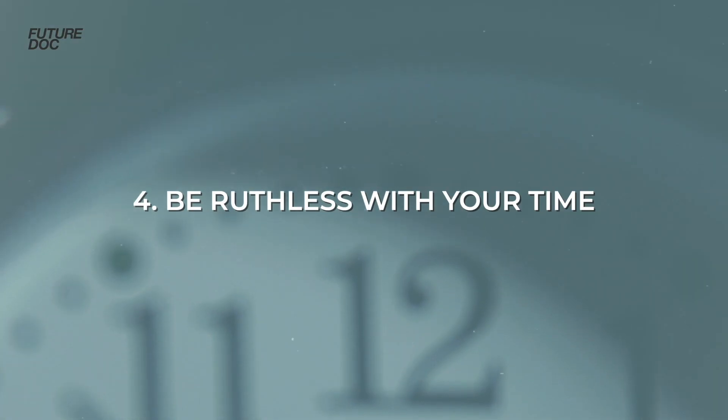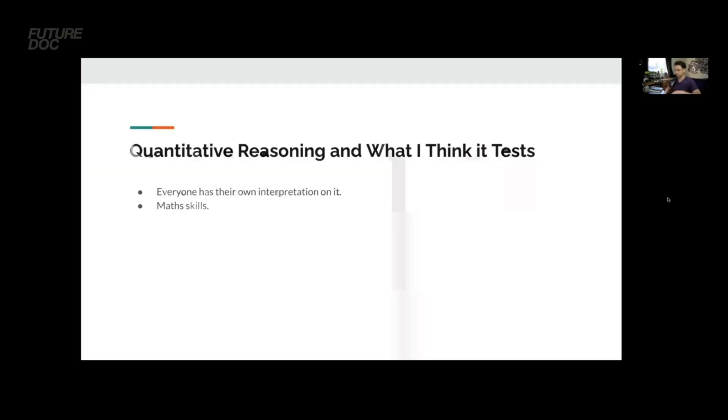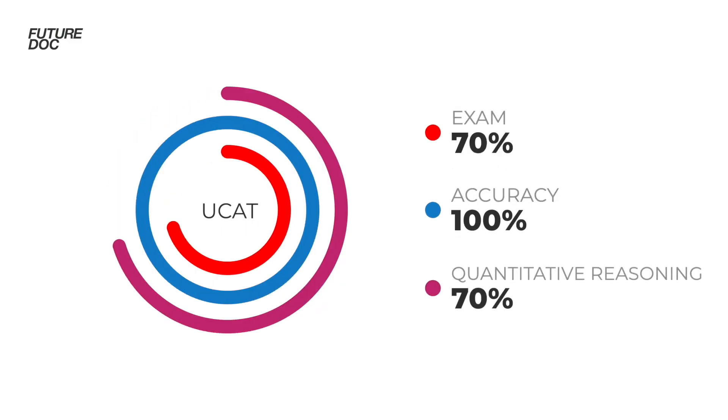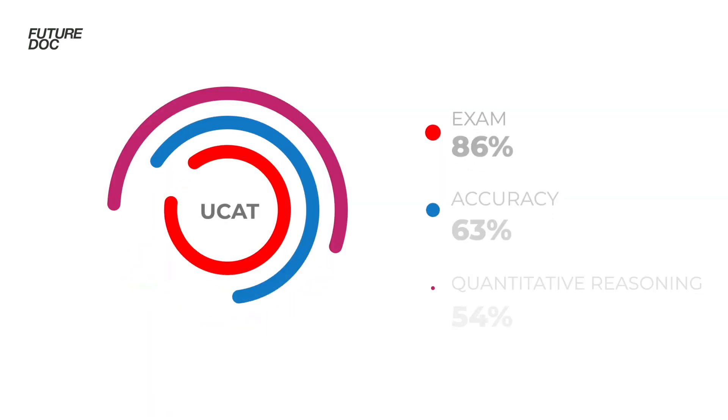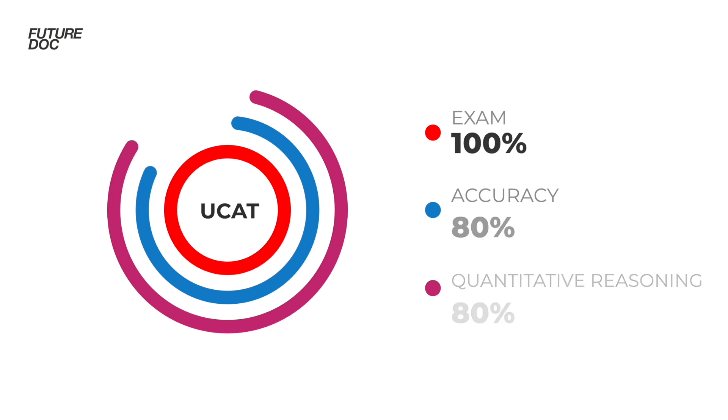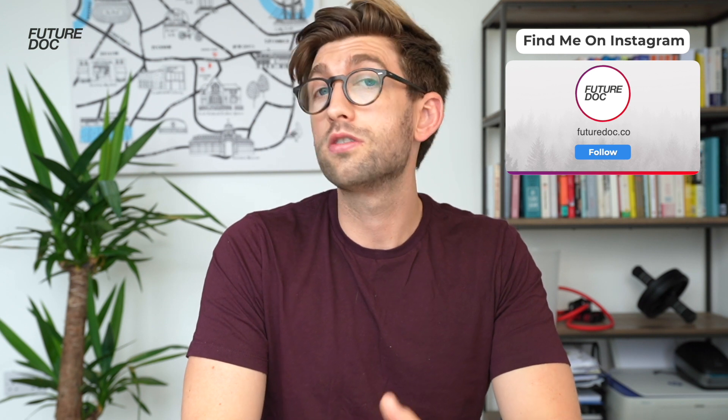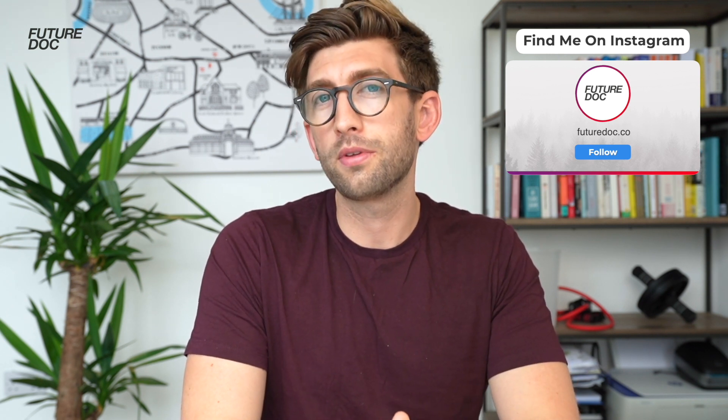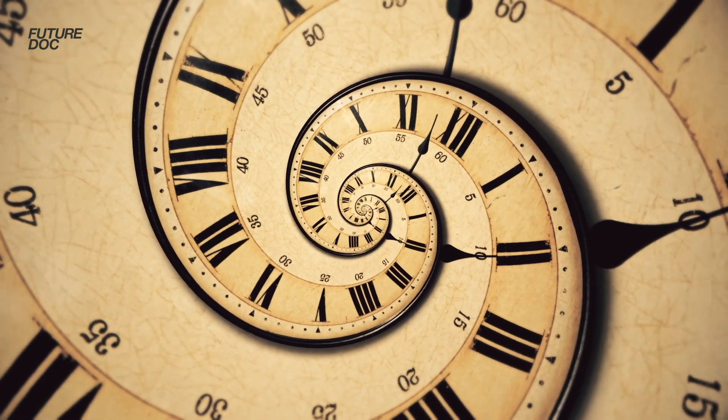Tip number four: be absolutely ruthless with your time. As my friend Kenji Tamita explained in a guest talk for my FutureDoc Elite program, there are purposely some 'impossible questions' designed to waste your time. It's how you react to those that determines how much of the test you get through and ultimately your score. If you score 100% accuracy on 70% of the test, you won't score as highly as getting 80% accuracy across the entire section. Be on the lookout for those questions — flag them, guess (there's no negative marking), and come back to them at the end if time allows.